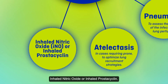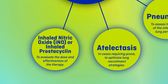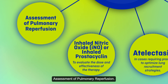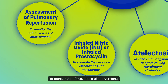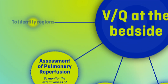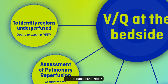Inhaled nitric oxide or inhaled prostacyclin to evaluate the dose and effectiveness of therapy. Assessment of pulmonary reperfusion to monitor the effectiveness of interventions. Assessment of pulmonary embolism to identify regions under-perfused due to excessive PEEP.